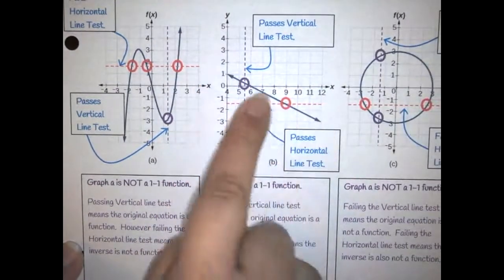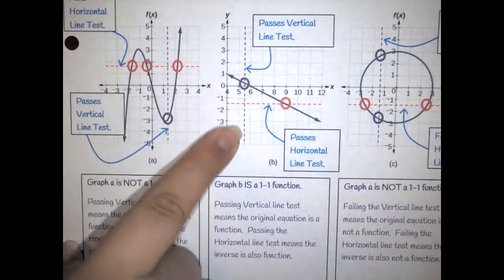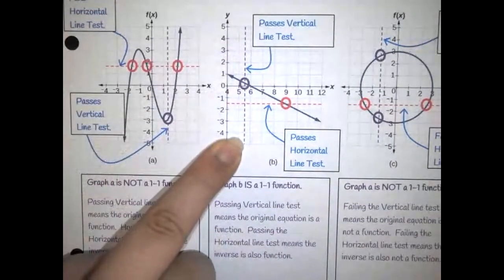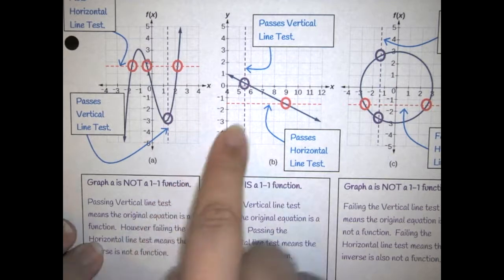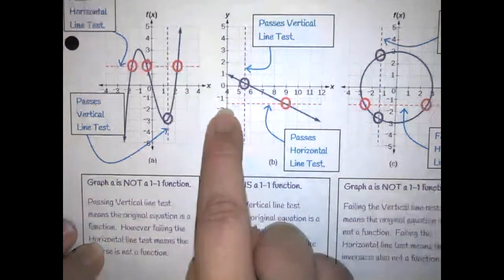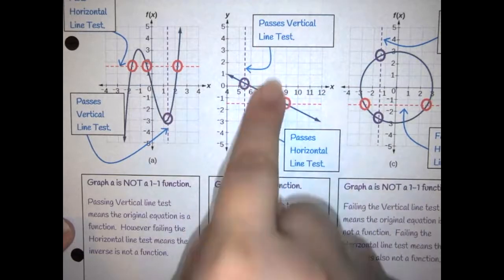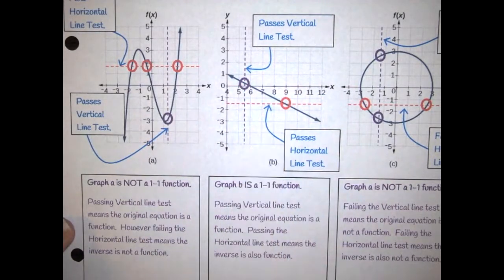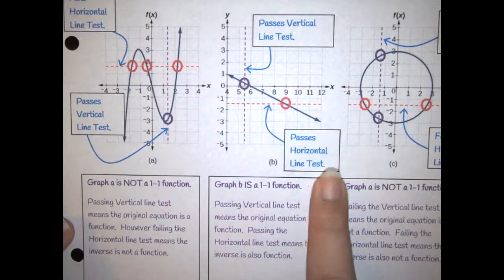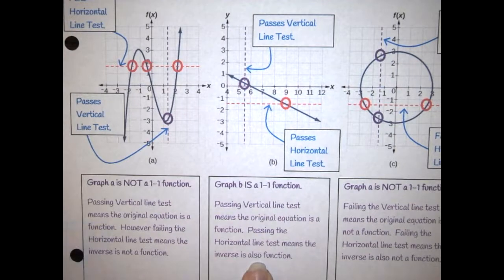For the second example — a straight line — we drop the vertical line in, confirming it is a function. Then to check if its inverse is a function, we drop the horizontal line in. It only passes at one point, and no matter where we move that horizontal line, it will only ever pass at one point. Therefore, because it passes the horizontal line test, it is a one-to-one function, and its inverse is a function.